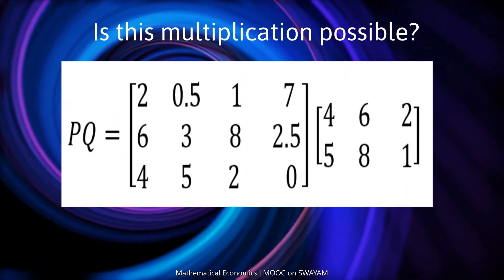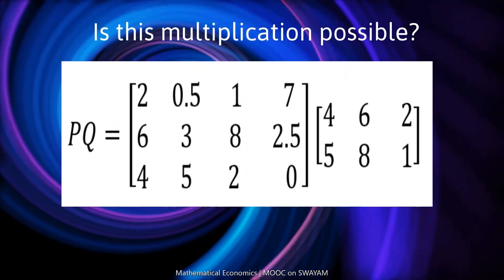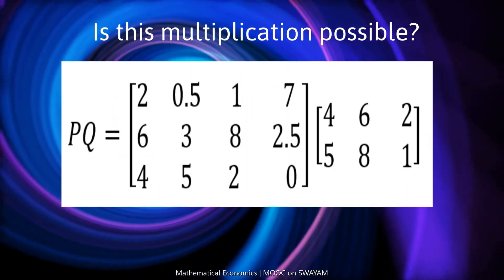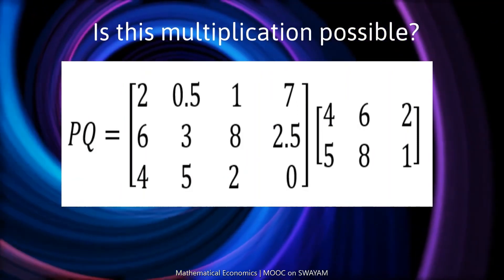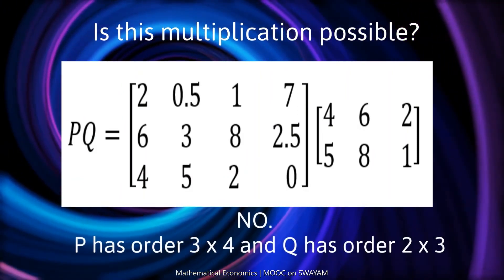Is this multiplication possible? No, because P is a matrix of order 3 by 4 and Q is a matrix of order 2 by 3.